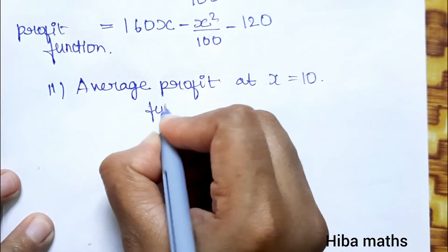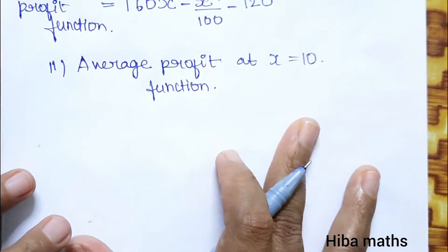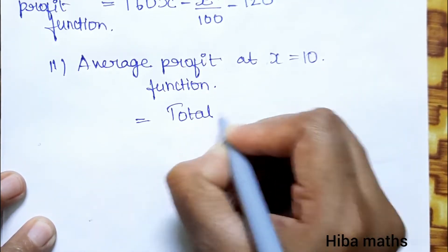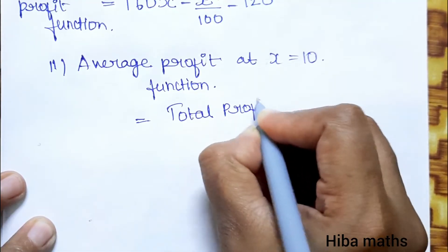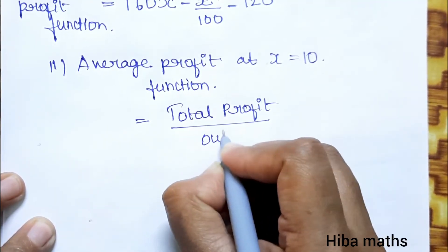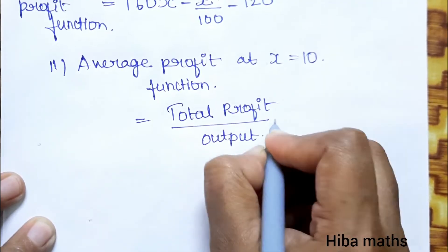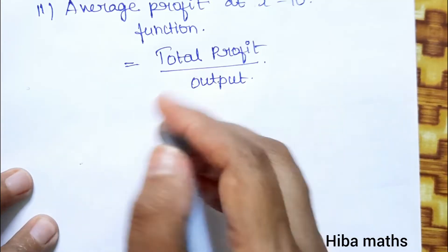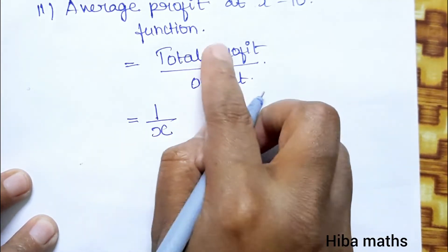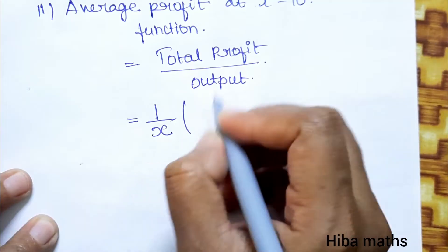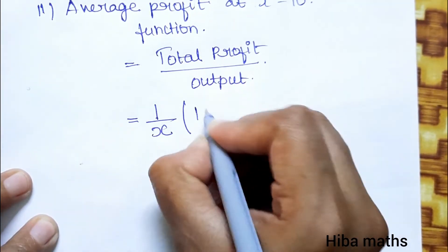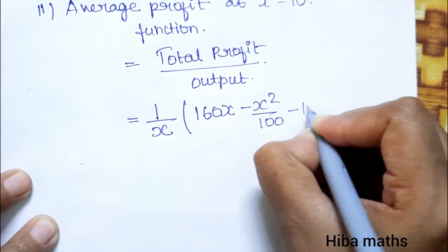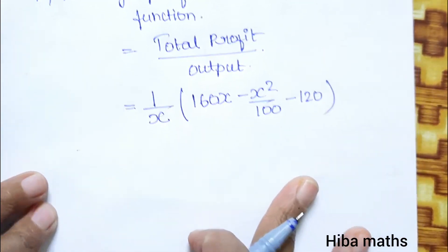Second, we find the average profit at output 10. The average profit function equals total profit divided by output x. So average profit = (1/x) × (160x - x²/100 - 120).